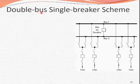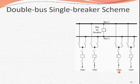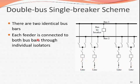The double bus single breaker scheme has two buses and one breaker. The two buses are connected by a bus tie breaker, along with isolators and a circuit breaker. There are incoming and outgoing lines on both buses. There are two identical bus bars; each feeder is connected to both bus bars through individual isolators.